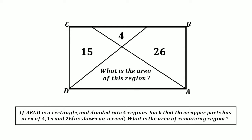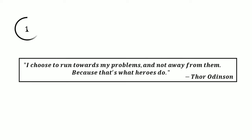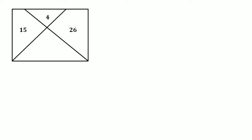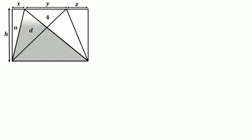In our figure, let these sides be x, y, and z, and let the length of the rectangle be h. Join this line and let the area of this region be a, and similarly let the area of this region be d. Now join the other line. Looking at these two triangles — they have the same area because both lie on the same base and both are between the same parallel lines. So after subtracting the common area, this triangle also has area equal to d.